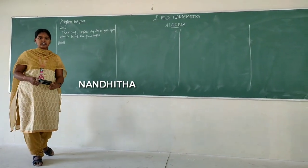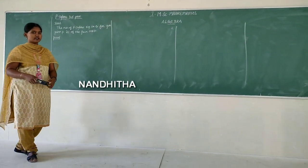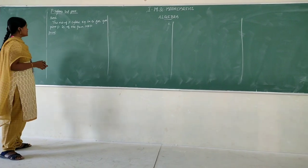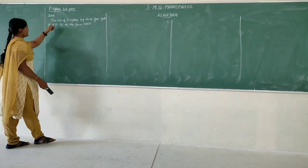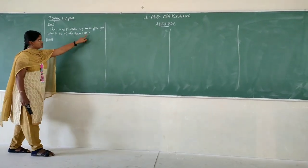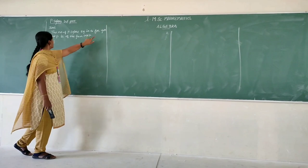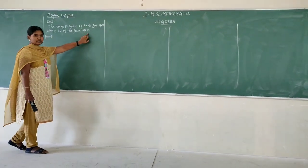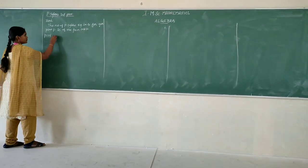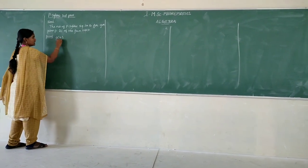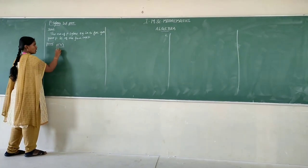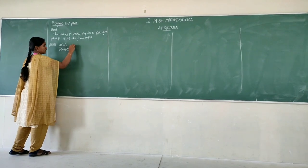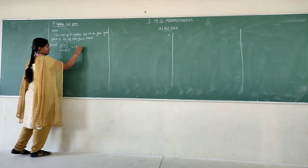I am Anita Minan from KSR College. Today we are going to see Sylow's Curve 1. The statement is: the number of Sylow p-subgroups in G for a given prime P is of the form 1 plus kp, which means the order of G divided by the order of the normalizer of P equals 1 plus kp.